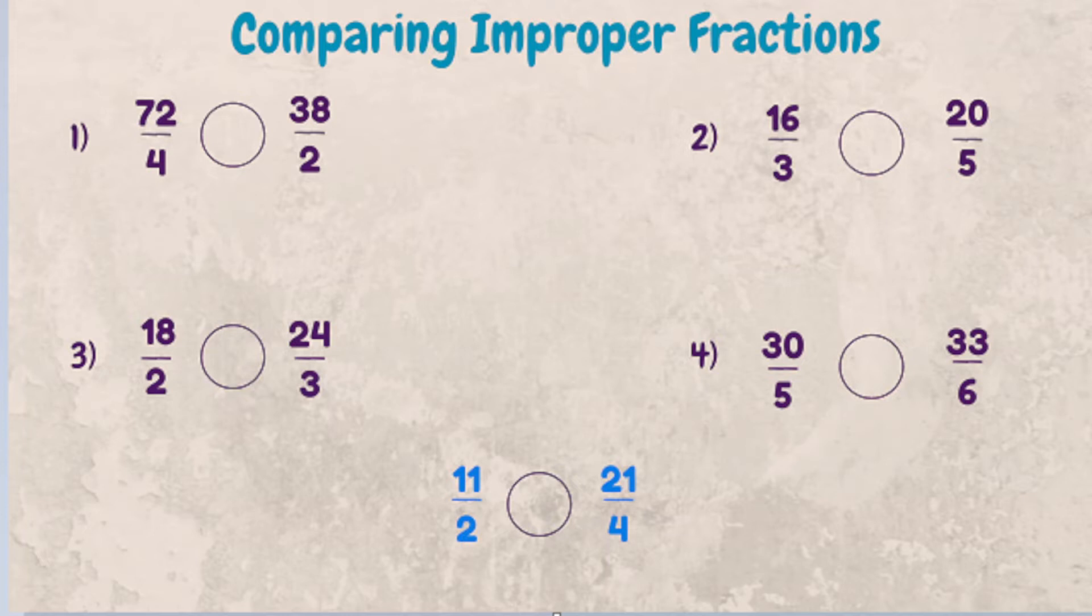The way cross multiplication works is you're going to take the numerator of one fraction and multiply it by the denominator of the other fraction and vice versa. So in the first example, we're going to look at 72 times 2 and that answer is 144. You're always going to put the result of your cross multiplication next to the numerator of the fraction you're multiplying. So we multiply this numerator so it goes on this side, 144.